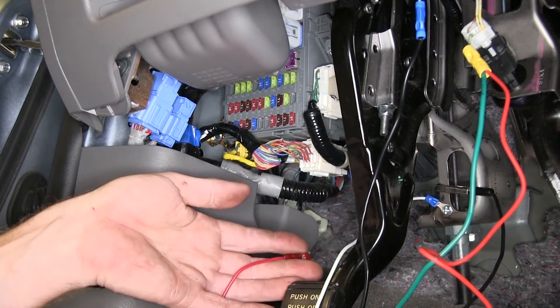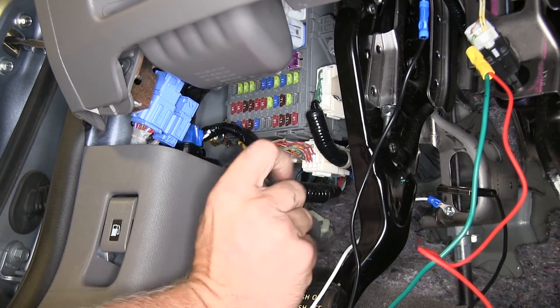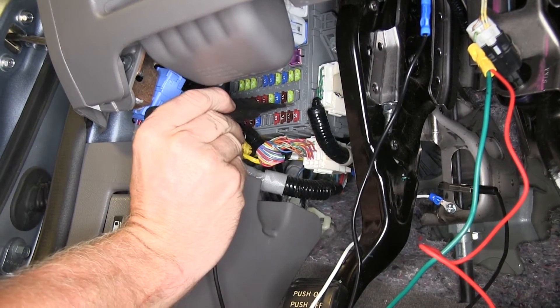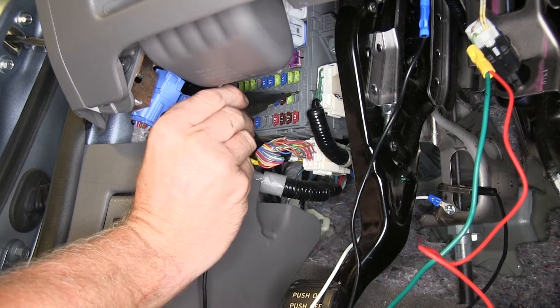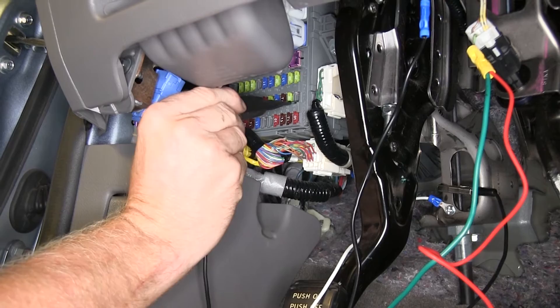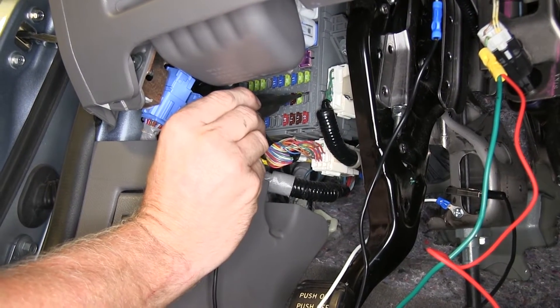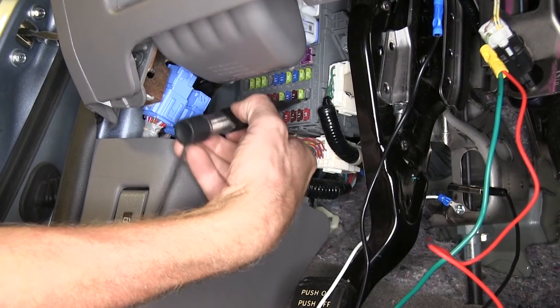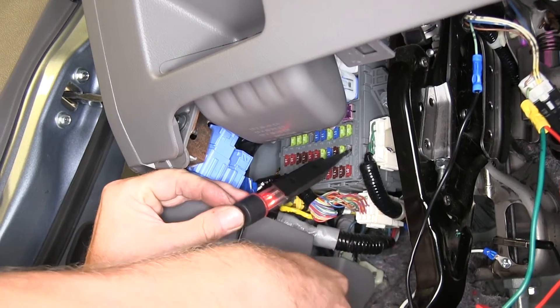For our fuse tap, we need to go to a fuse that's hot only when the key is in the on position. Now we're actually going to try this one right here, label number 22. Now there's no fuse in there pre-existing, so let's go ahead and try it out. So there's nothing with the key off, so let's go ahead and try the key on. Nothing on the bottom. Okay, so it looks like the top side's hot.